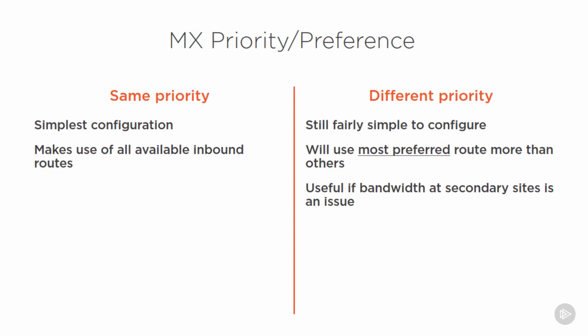The other approach is to set different priorities on the MX records so that one or a few of them are the most preferred. This is still quite simple to configure - it's just different priority values on the DNS records. Generally you'll see other mail servers respecting your MX preferences and using your most preferred MX most of the time. Having different priorities is useful if your secondary MX goes to a disaster recovery site with less bandwidth than your production site, or if you want to route mail into the geographic location where the majority of users are located.